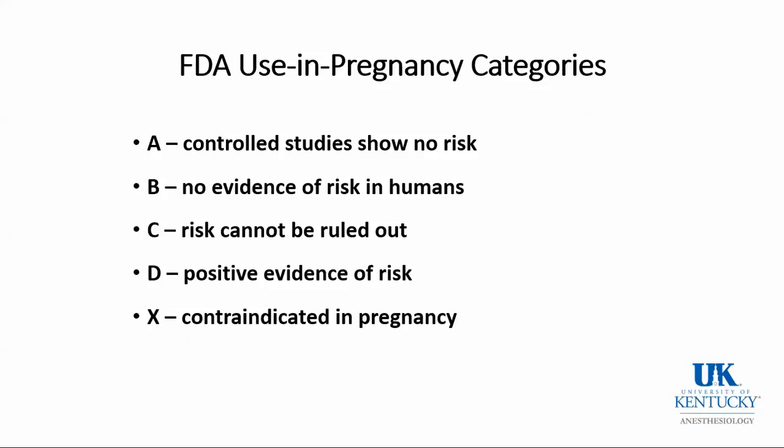Category D is where there's positive evidence of risk. An example is benzodiazepines — retrospective studies of chronic use found an association with cleft lip and palate, so benzodiazepines are categorized as Class D. Category X drugs are absolutely contraindicated in pregnancy; thalidomide would be an example.